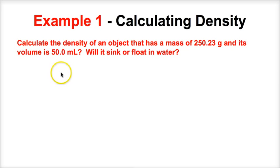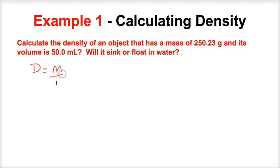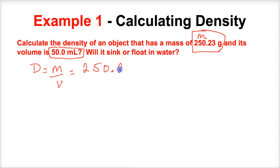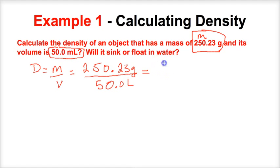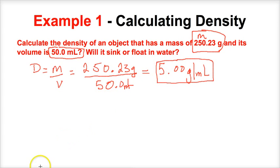Problem one: calculate the density of an object that has a mass of 250.23 grams and a volume of 50.0 milliliters. Will it sink or float in water? To get the density we take the mass divided by its volume: 250.23 grams over 50.0 milliliters. Put this in our calculator and we end up with 5.00 grams per milliliter using the correct number of significant figures.